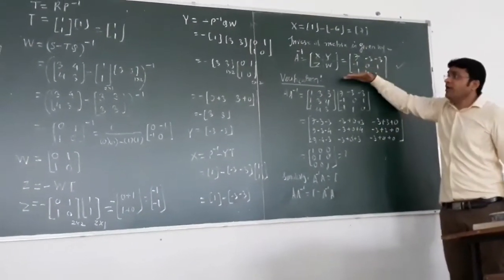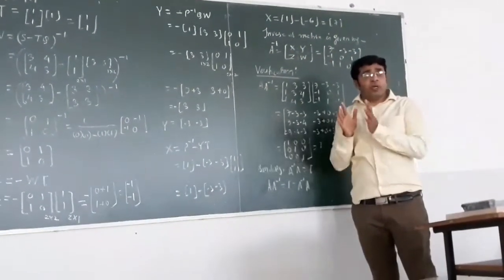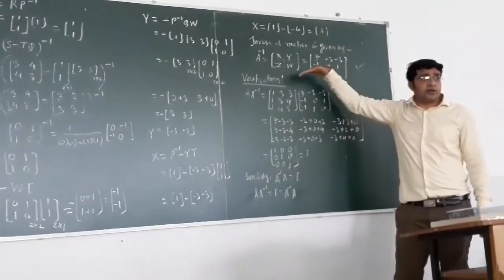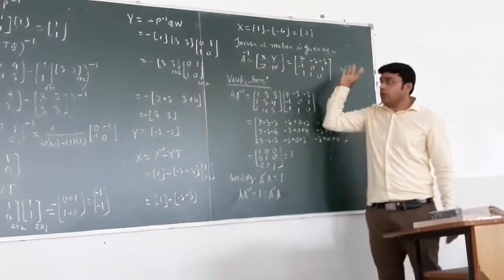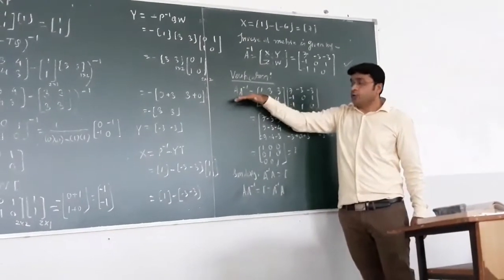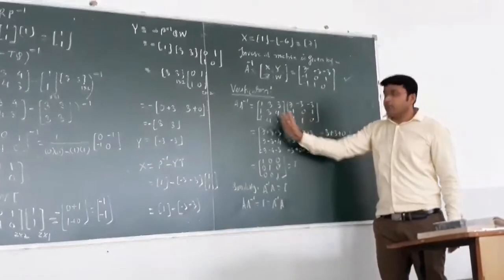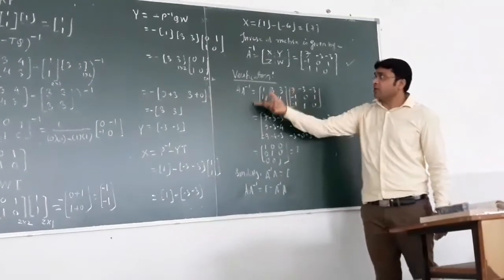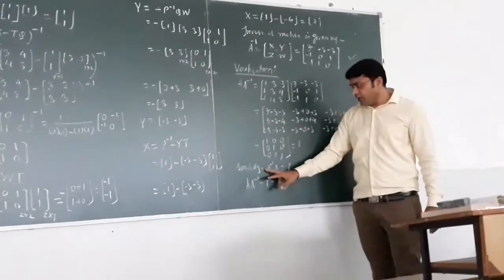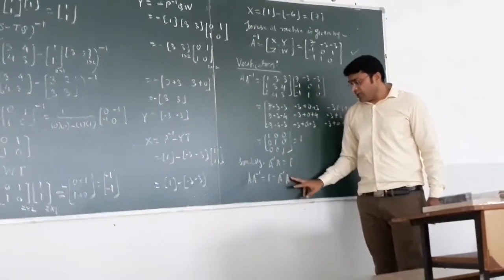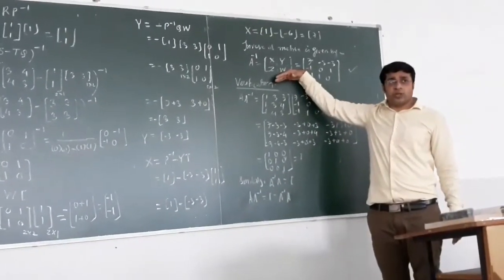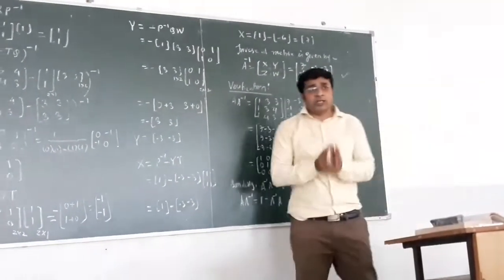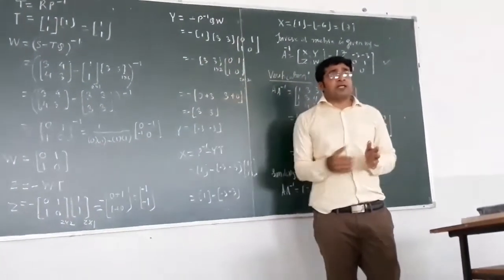So this is the required inverse. This is how we find out the inverse of a matrix by the partitioning method — using the set of formulae and finding out the multiplications to get the answer. We can verify the answer by computing A times A inverse, which should give the identity matrix [1, 0, 0; 0, 1, 0; 0, 0, 1]. Since we get the identity matrix, our inverse is correct. If verification is asked, you do it; otherwise this is your final answer.